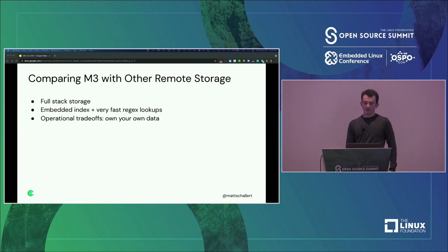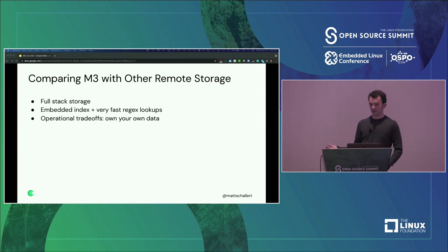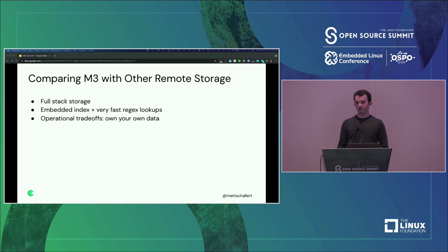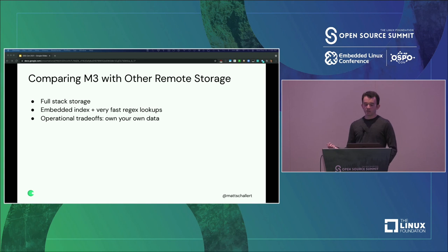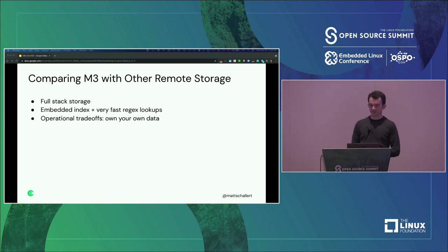M3 is just one of many open source Prometheus remote storages, and there are others you might be familiar with. It's worth talking about the properties that make M3 relatively unique in the space. The primary differentiator is that M3 itself stores data on disk as opposed to offloading storage to some other service like object storage or a remote API. This gives great benefits - the main one being the performance you get from the combination of an optimized in-memory index combined with fast local disks. That being said, it also comes with some trade-offs.